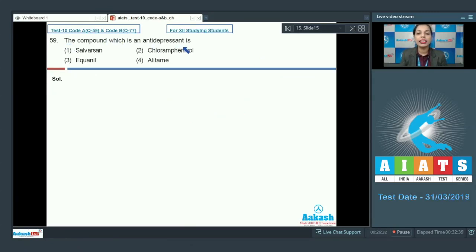After this, question number 59: The compound which is an antidepressant is - if I talk about antidepressant drug, that is Equanil. That is a tranquilizer and that is used as an antidepressant drug. That's why just choose option 3 as the correct option.